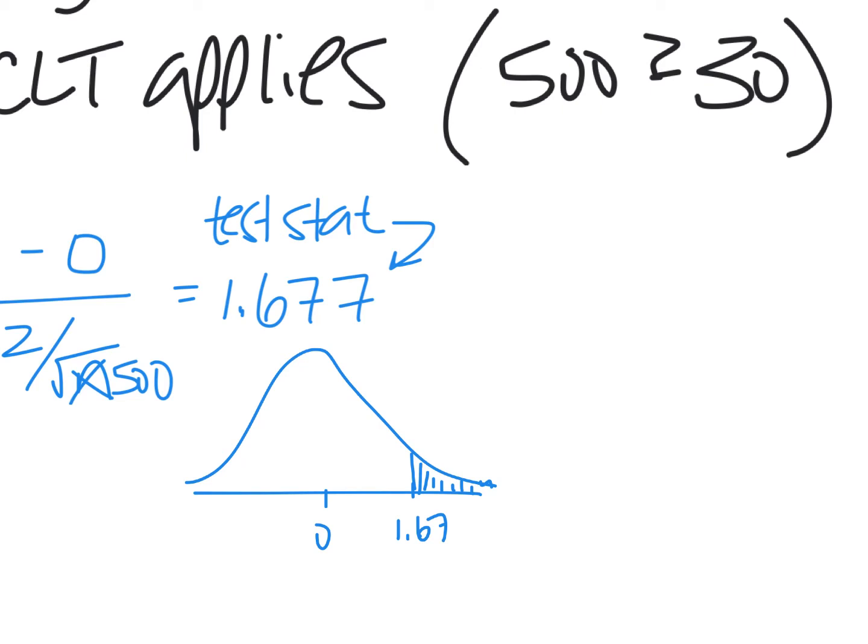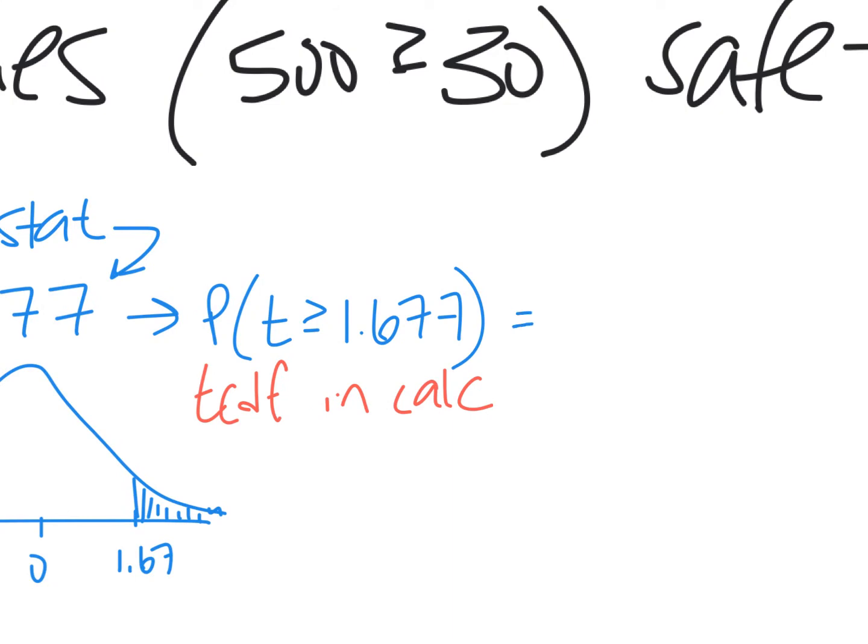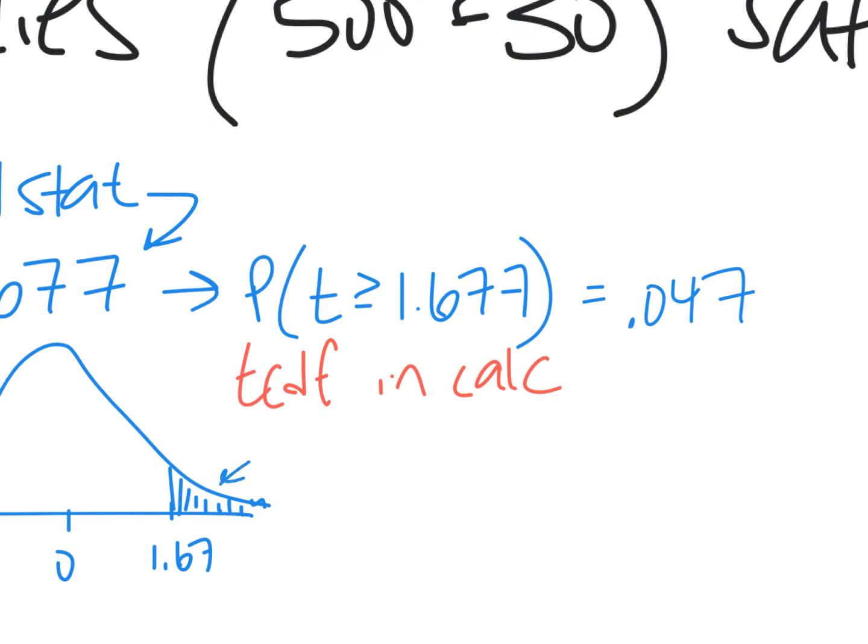And so we need to figure out what our p-value is. And so in this case, the probability that the test statistic is greater than or equal to 1.677, what you do is TCDF in the calculator. And it works just like normal CDF, but this is TCDF in the calc. So it's a different type of distribution. Remember there's more shaded area here in the tails than in a normal distribution. But that's what you're typing into the calculator, and it gives you a p-value of 0.047. And so that means that this shaded area right here is 0.047, so like almost 5%.